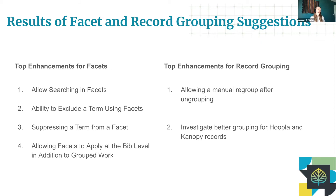The next enhancement is the ability to exclude a term using facets. I'm not going to lie, this one makes me a little nervous — we need to figure out the UX on this, it's not something that's normally done with facets. But we've had a lot of people asking for it. With the way library content is, and the way users don't use advanced search, sometimes they need a way to say 'not this' — for example, show me everything in the catalog but I don't want to see Hoopla, show me all of the other ebooks.